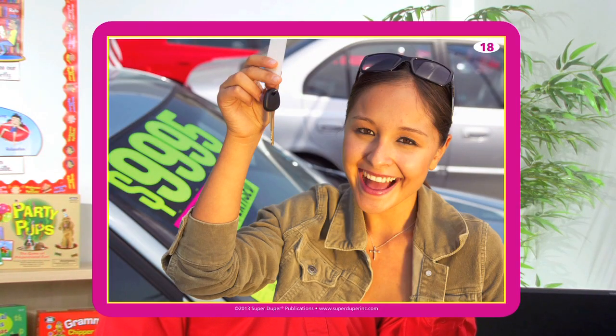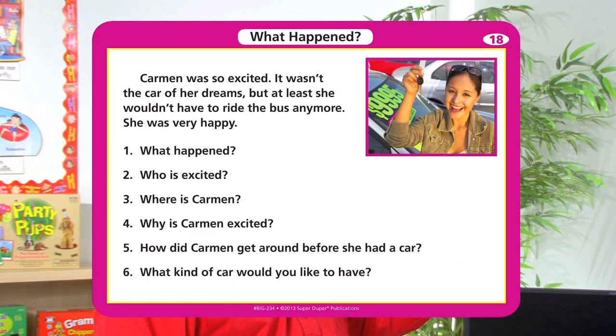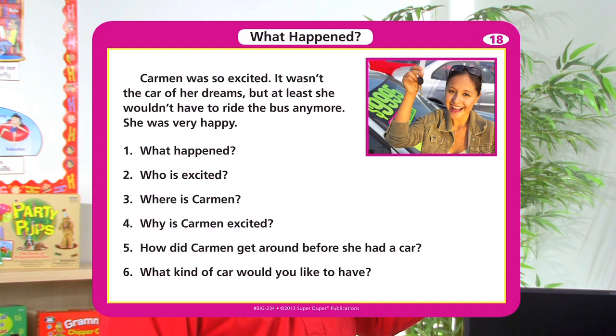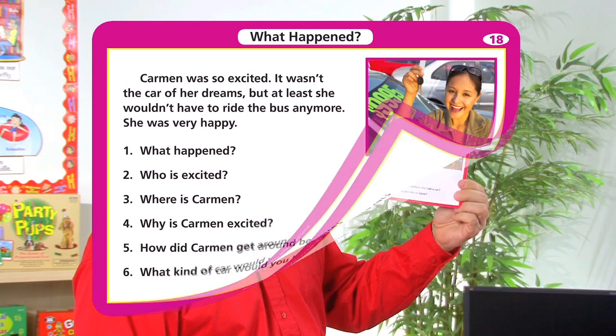Let's go to what happened. We show a picture and ask the first question: What happened? The student looks at the picture for clues to determine what happened, then we read the story. Carmen was so excited. It wasn't the car of her dreams, but at least she wouldn't have to ride the bus anymore. She was very happy. Question two: Who is excited? Three: Where is Carmen? Four: Why is Carmen excited? Five: How did Carmen get around before she had a car? And number six: What kind of car would you like to have?